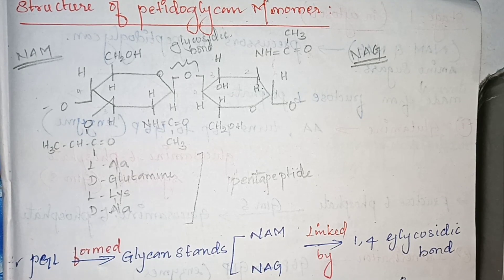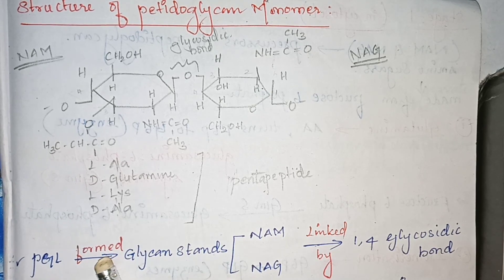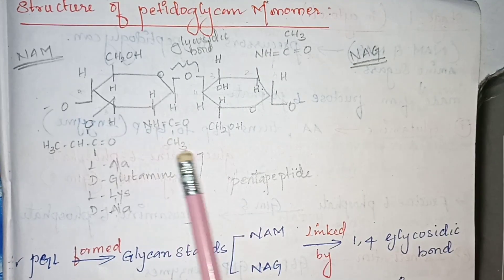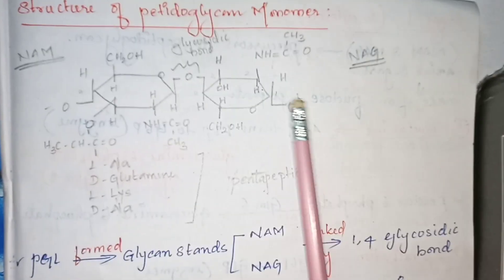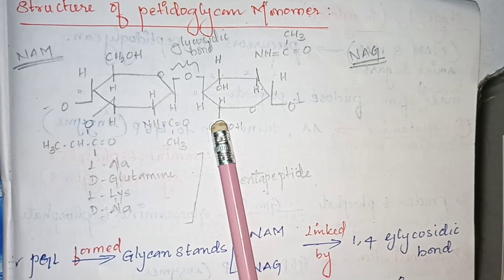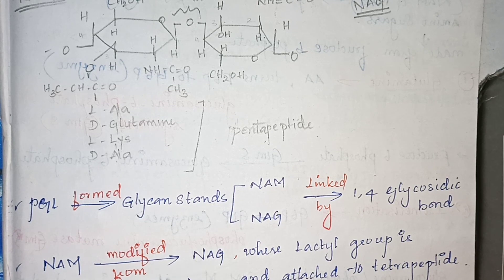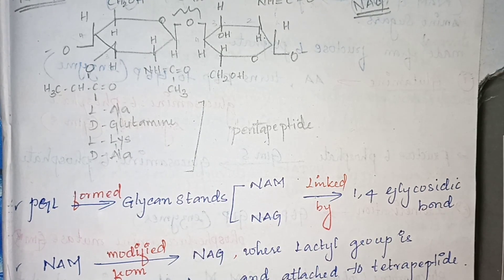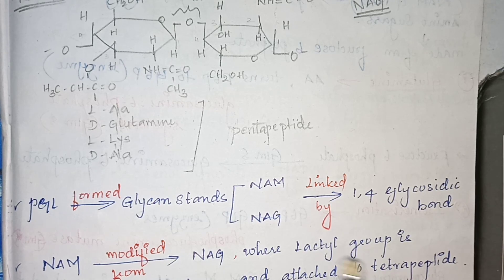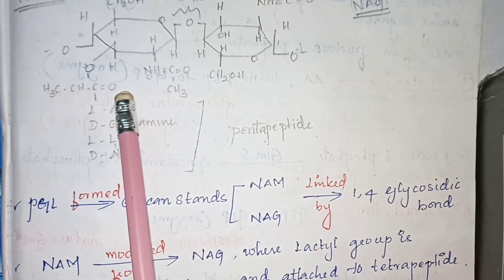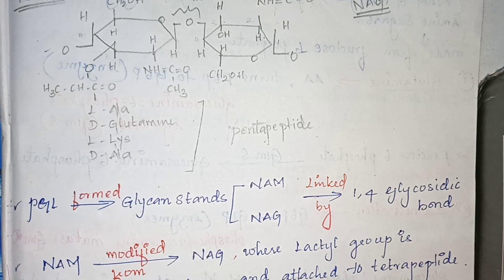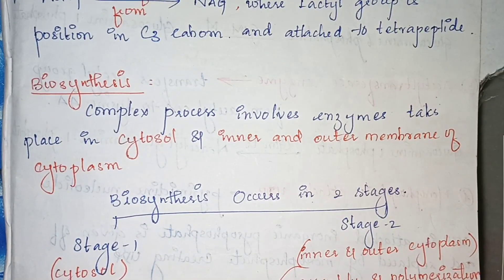The peptidoglycan layer is formed by glycan strands of NAM and NAG, linked by 1,4-glycosidic bonds. NAM is a modified form of NAG, where a lactyl group is positioned at the third carbon and attached to the tetrapeptide. NAM consists of these amino acids cross-linked to the glycan chain.